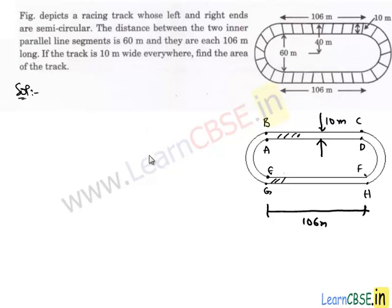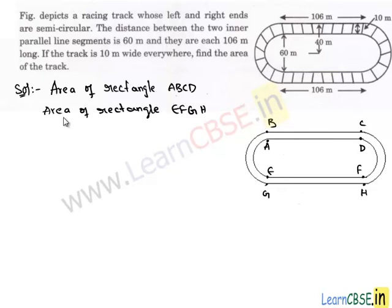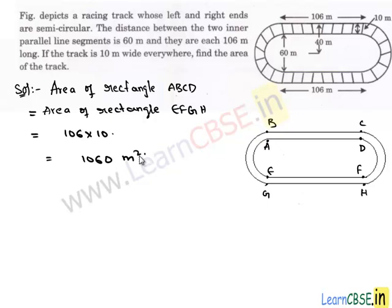So by using this we can find the area. The area of rectangle ABCD equals the area of rectangle EFGH, which is 106 times 10. Since its length is 106 and breadth is 10, it is equal to 1060 square meters. Let us denote this area as A1.